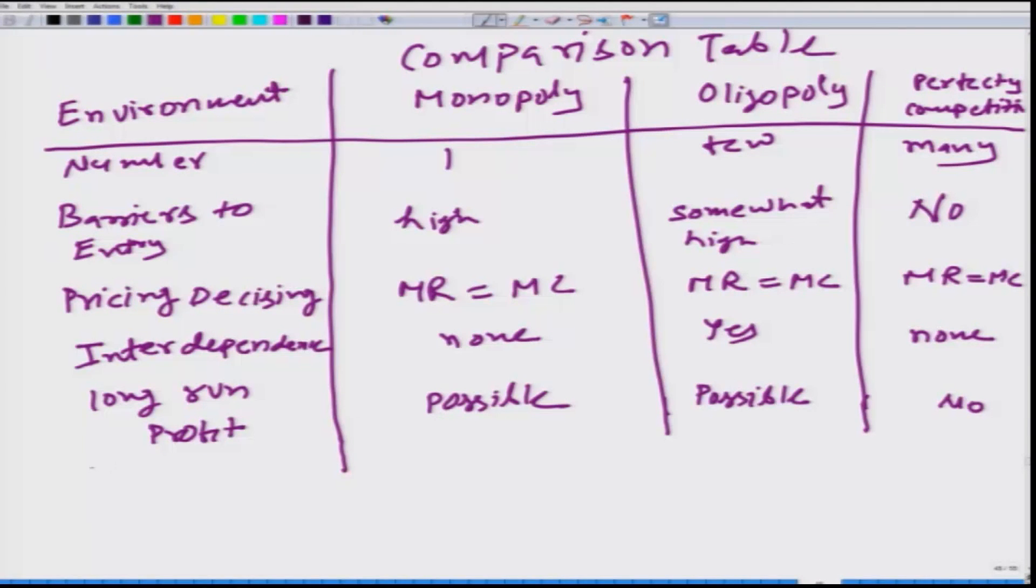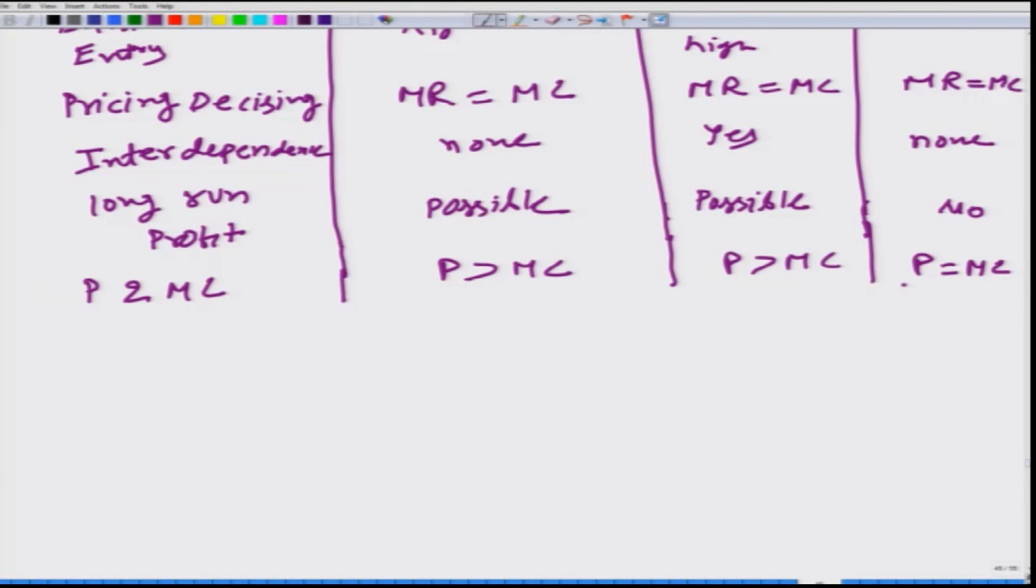Let us look at the relationship between price and marginal cost. In case of monopoly, price will be greater than marginal cost. In oligopoly also price would be greater than marginal cost. But in case of perfectly competitive market, P has to be equal to the marginal cost because in perfectly competitive market, P is equal to MR. So it is also clear that in all other cases, P is greater than marginal revenue.